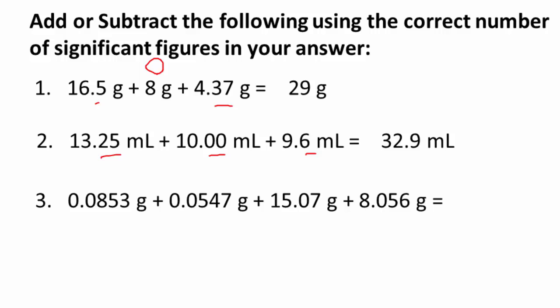Next problem: 0.0853 grams plus 0.0547 grams plus 15.07 plus 8.056. We have 4 places, 4 places, 2 places, and 3 places to the right of the decimal respectively. The least is 2 places, so our answer is rounded to 2 places to the right of the decimal, giving 23.27 grams.